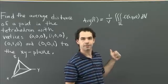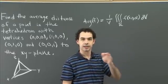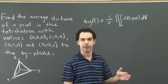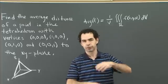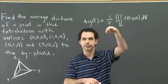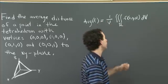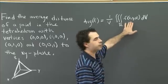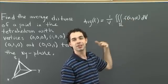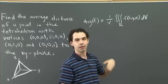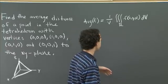In our case, the function we're trying to find the average value of is the distance between a point and the xy plane. But that's an easy function — that's just z. For any point in space, its distance from the xy plane is just its height, its z value. So the function we're seeking to find the average value of is z. And so most of the work of this problem is going to be in figuring out what the bounds are and then doing the actual integral.